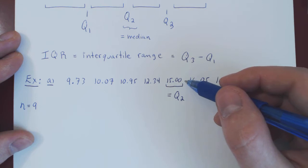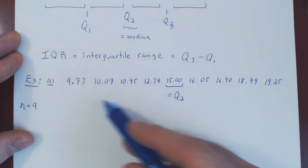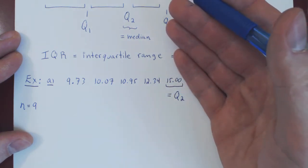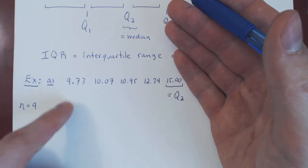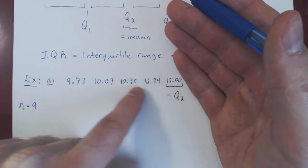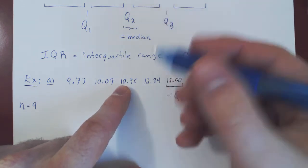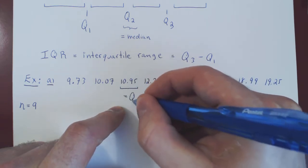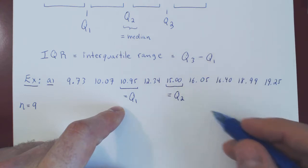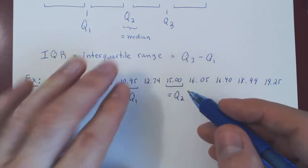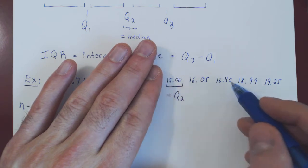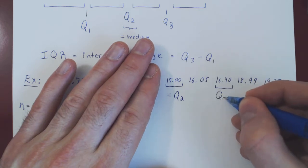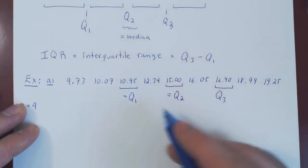Now when we consider the lower 50% of values to find the first quartile: since Q2 is an element of our set, we include it. So we have 5 values — an odd number — and the middle value is 10.95, which is our first quartile Q1. For the third quartile, we do the same thing: since Q2 is an element of our set we still consider it, giving us 5 values with a middle value of 16.40, which is our third quartile Q3.